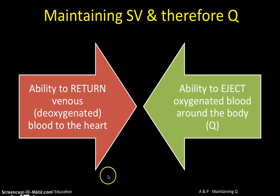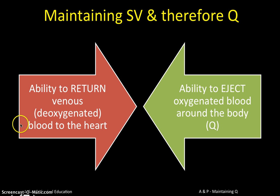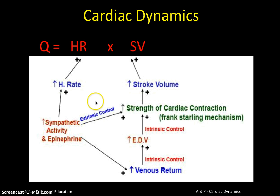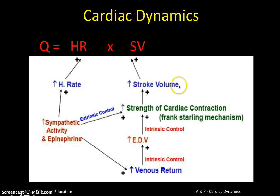In order to maintain cardiac output — to keep our heart ejecting oxygenated blood around the body for our muscles to use — we need a very good ability to return venous or deoxygenated blood to the heart. In order to pump it out, we've got to get it coming back in. Heart rate will be looked at in a separate video; here we're focusing on stroke volume. Stroke volume is affected by the strength of contraction, how much the ventricles fill (EDV), and venous return.